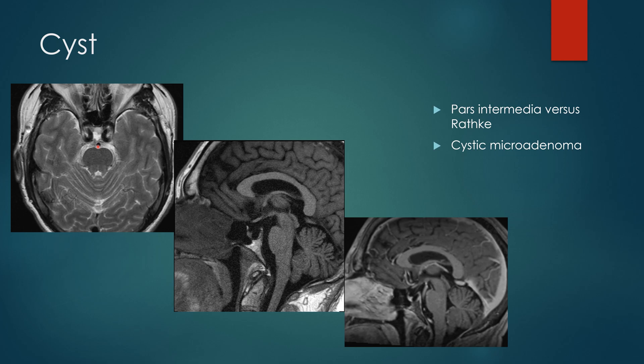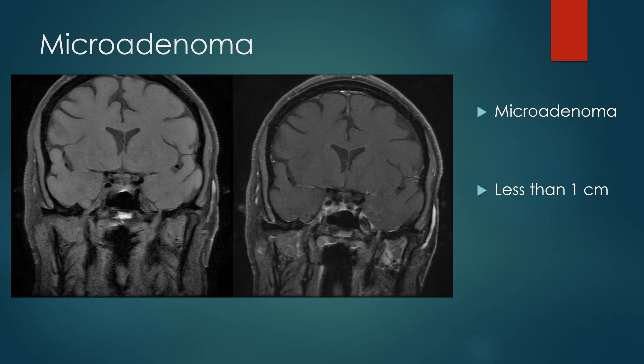Cystic microadenomas are rare. More commonly you'll see them when somebody with a prolactinoma is being treated with bromocriptine — when that micro- or macroadenoma, the prolactin-producing one, is treated, it turns cystic and involutes. The typical microadenoma is described as a hypo-enhancing lesion, so you really need contrast to find one. On the coronal T1 pre-contrast you see pretty homogeneous signal of the gland, but post-contrast, instead of uniform enhancement, you'll see a hypo-enhancing lesion in the left sella measuring less than one centimeter — we call that a microadenoma.